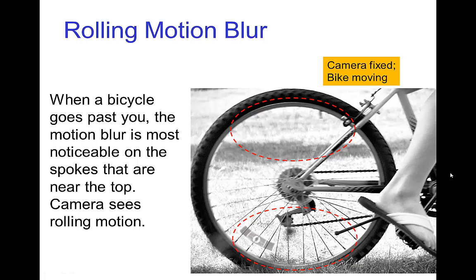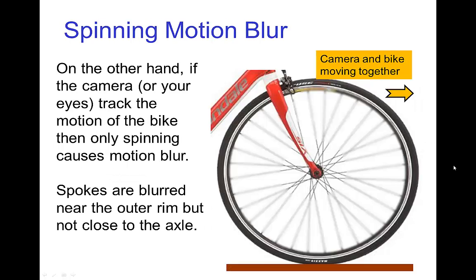We see this in this example of a motion blur when a bicycle moves past you. Here the camera is fixed, the bicycle is moving, and you notice that there's very little motion blur on the lower part compared to the upper part. On the other hand, if the camera was tracking the motion of the bike, then we would just be seeing the spinning of the wheel, and in that case the outer rim is traveling faster than points near the center for pure spinning, so the outer rim would be more blurred than the inner part.